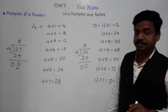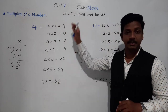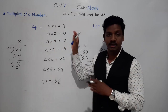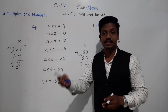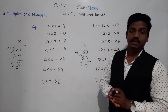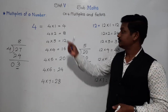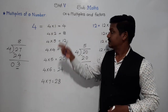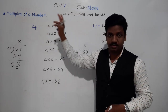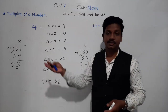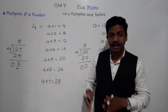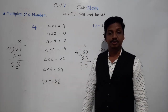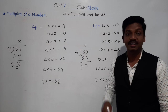Two things to keep in mind: the definition of multiples — numbers that come in the table of the given number, or numbers divisible by the given number. Second, multiples are uncountable — every number has uncountably many multiples. Also, every number is the first multiple of itself — 4 is the first multiple of 4, 12 is the first multiple of 12. The last multiple cannot be determined.